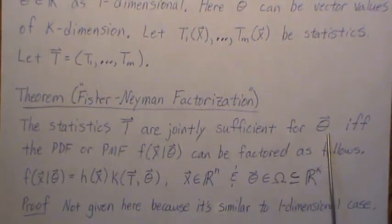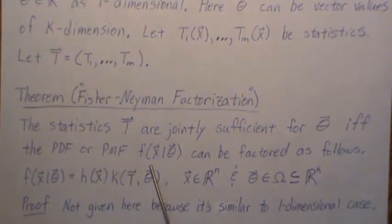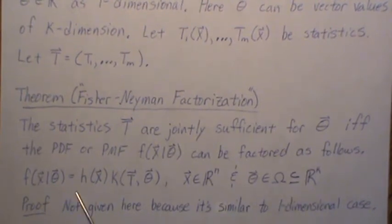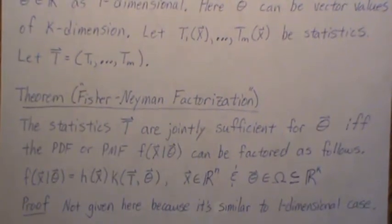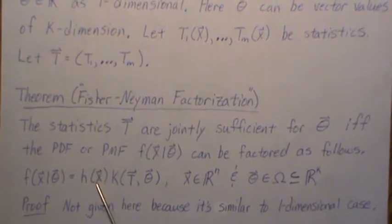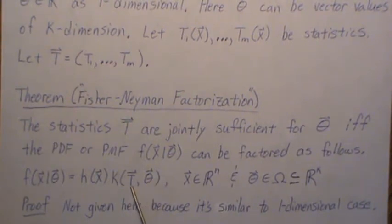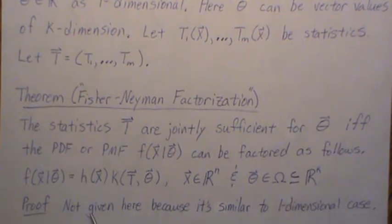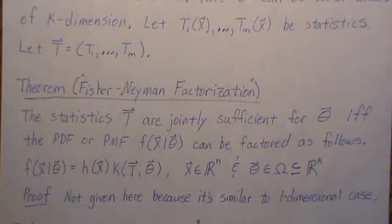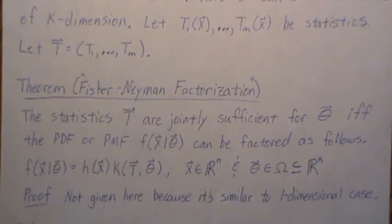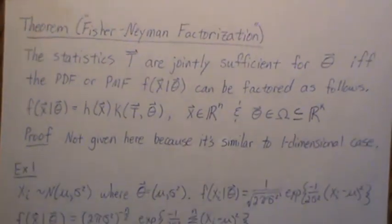The statistics are jointly sufficient for theta if and only if the PDF or PMF f of x given theta can be factored as follows: h is a non-negative function of only the data x's, and k is a non-negative function of theta and the data but only through the statistics t. We're not going to give the proof because it's essentially the same as the one-dimensional case, but we'll go through some examples.